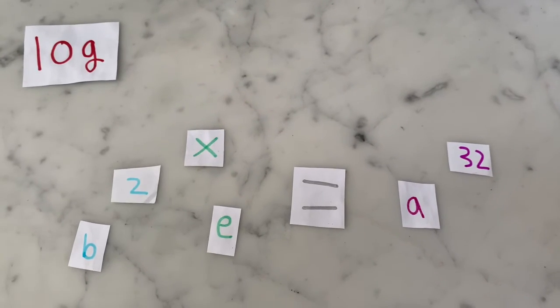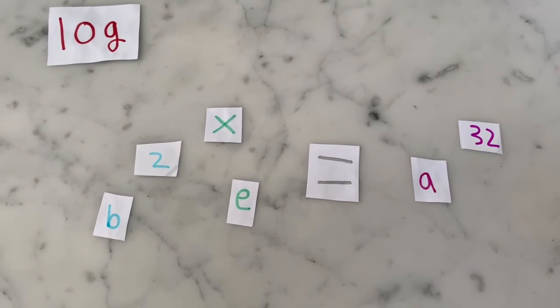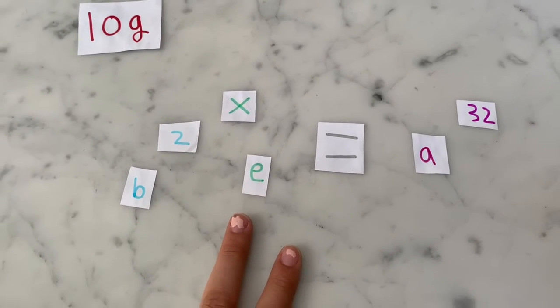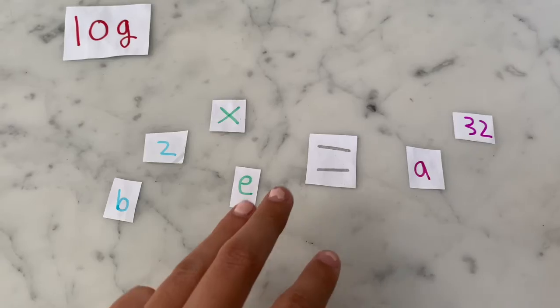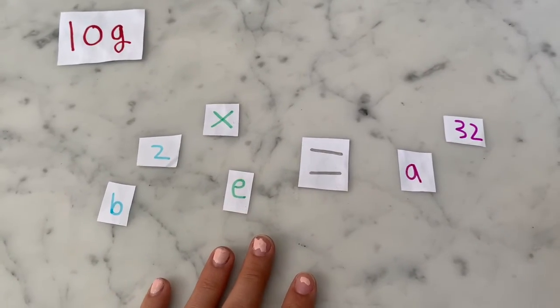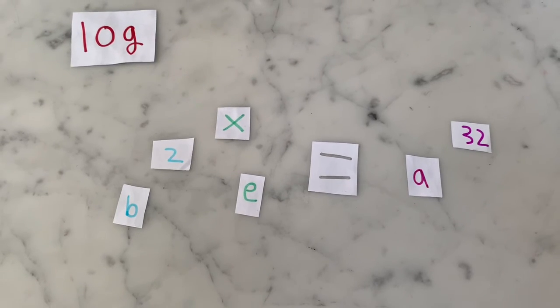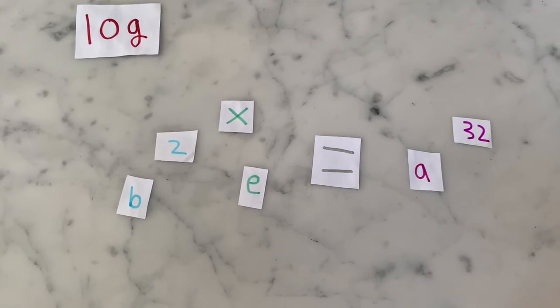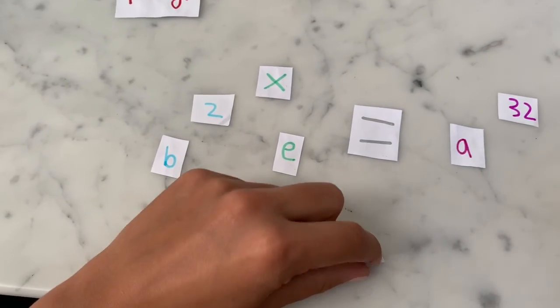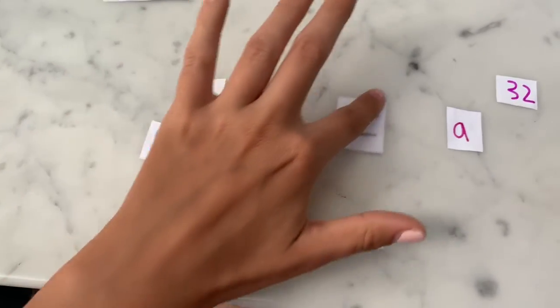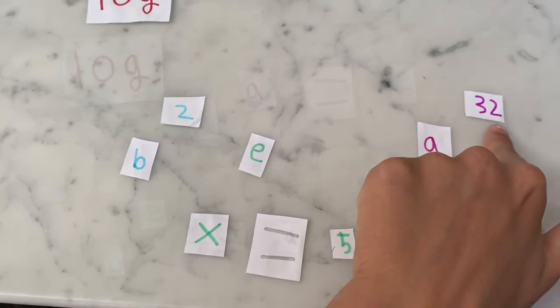So 2 times itself how many times equals 32? 2 times 2 is 4, times 2 is 8, times another 2 is 16, and times a fifth 2 is 32. So we know that x equals 5, because 2 times itself 5 times is 32.